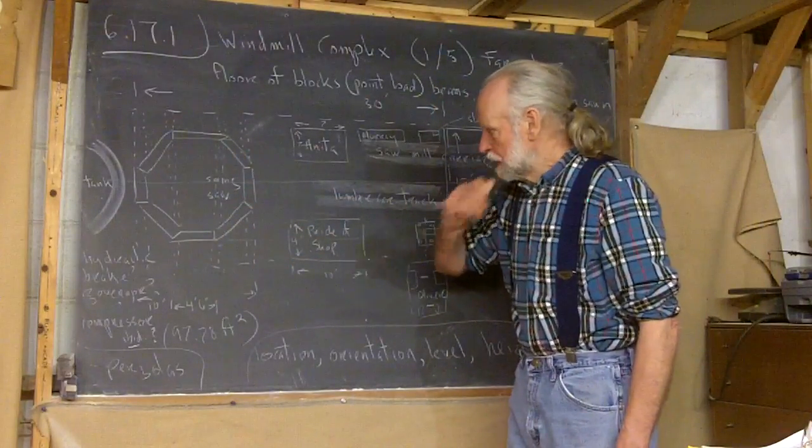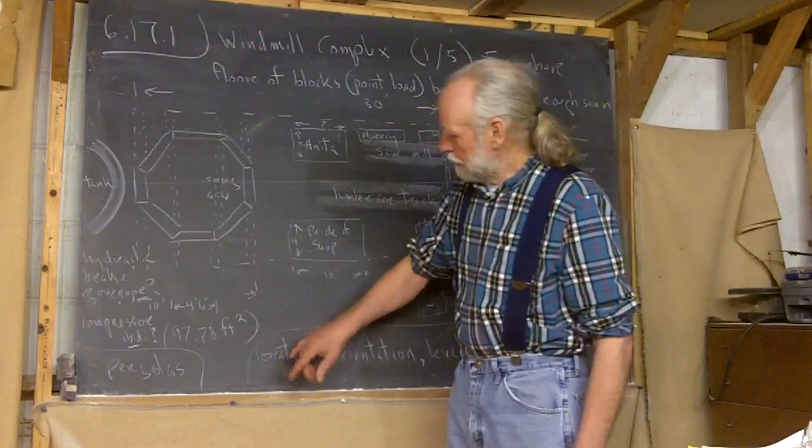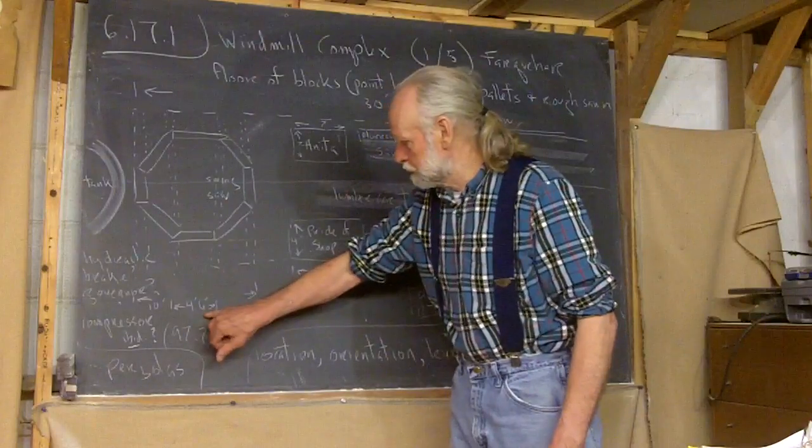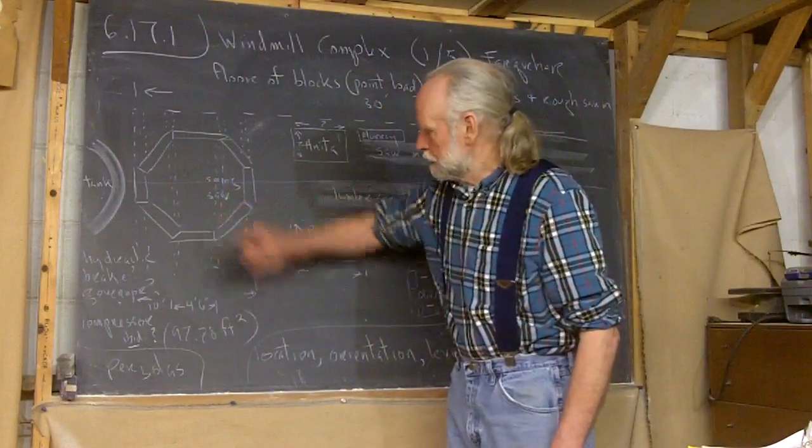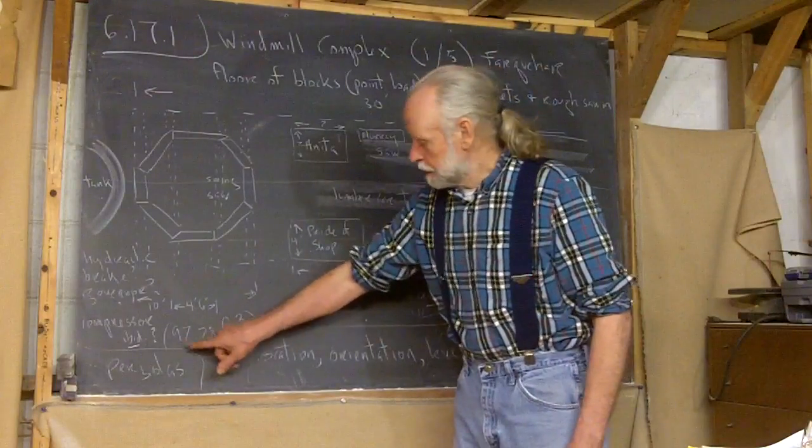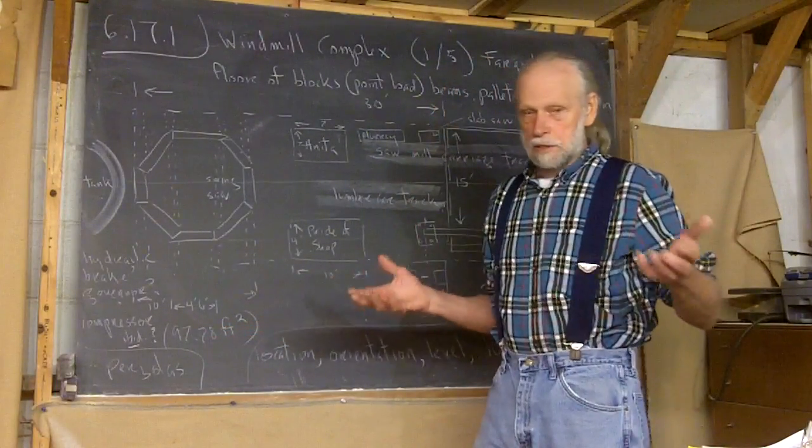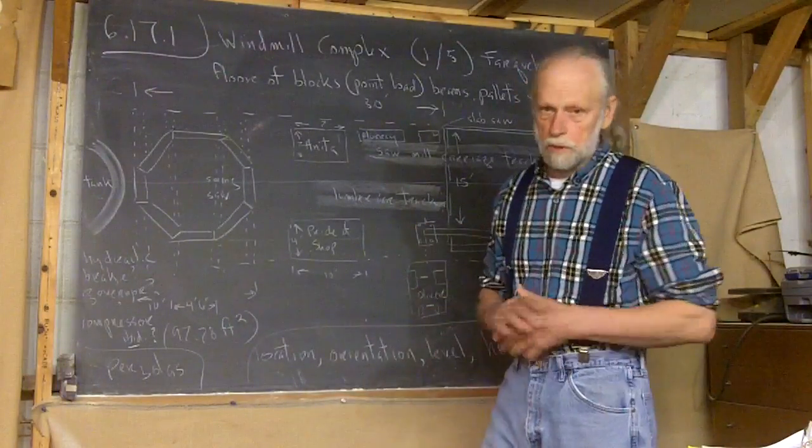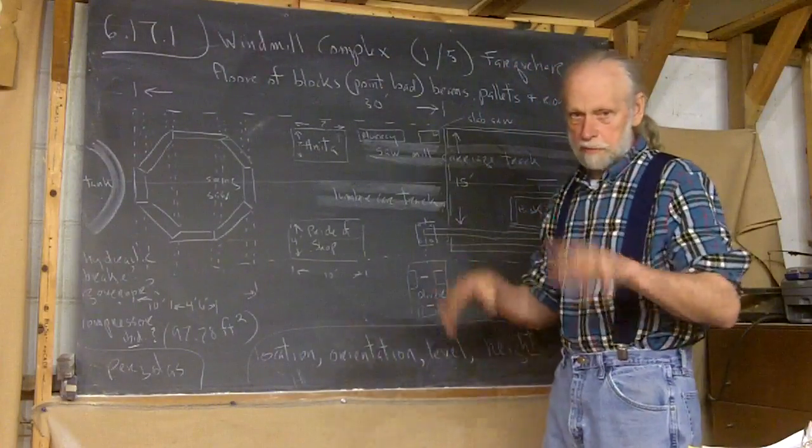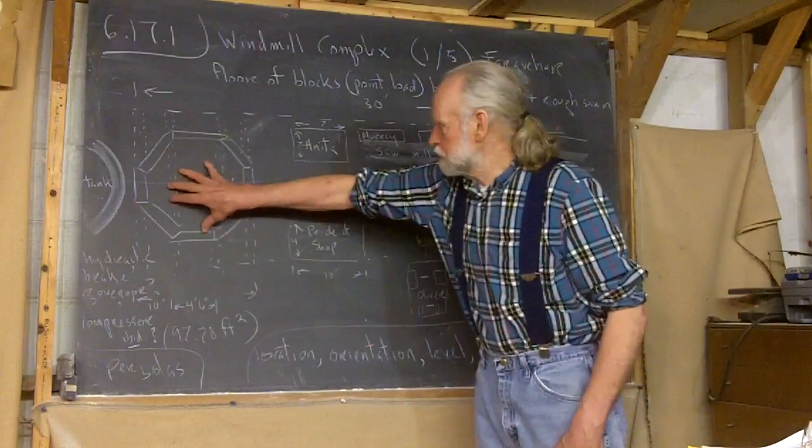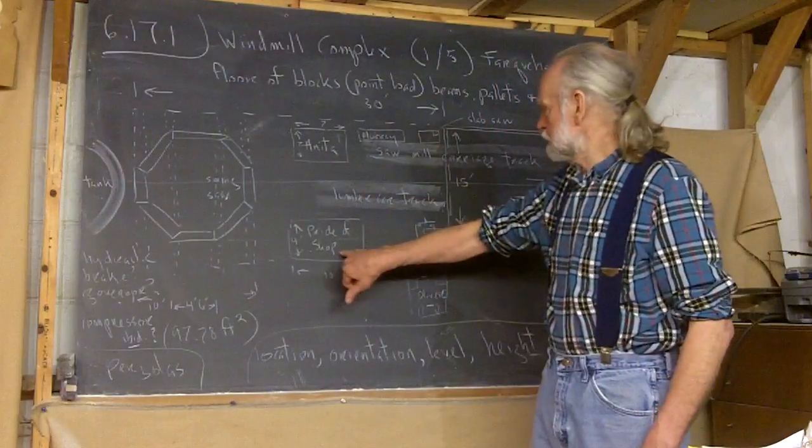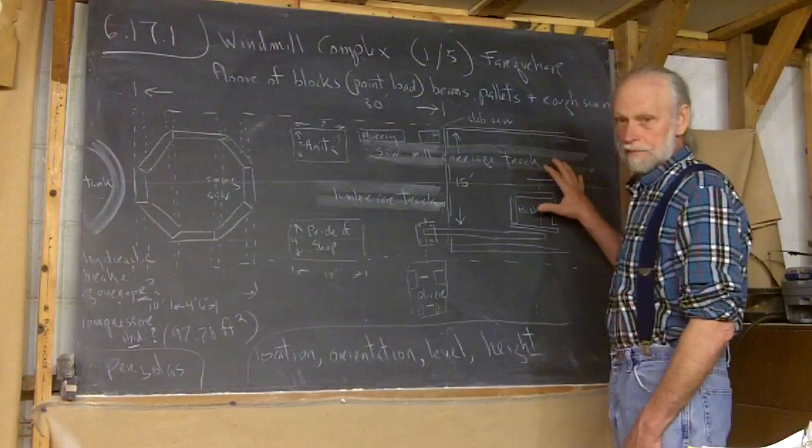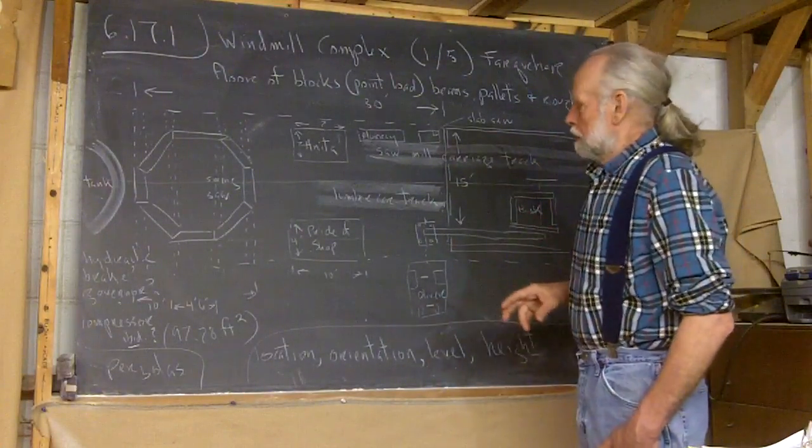The windmill itself, the footprint of it is octagonal. What I found through all this calculation was if the sides of the octagon are four foot six inches, that area will be less than a hundred square feet: 97.78. And in this township, as long as something is less than a hundred square feet, you can build anything you want. They don't tax it. You don't need a permit. They don't think about code. I guess they call it a toy. I already got the permit for the sawmill building. It's way bigger.